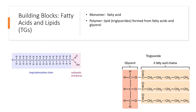Now let's look at fatty acids and lipids. The monomer in this case is fatty acids, which consist of a long hydrocarbon chain and a carboxylic acid group. This hydrocarbon chain can have any number of carbons — short or long — but the point is that three of these chains are combined with glycerol in order to form a triglyceride.